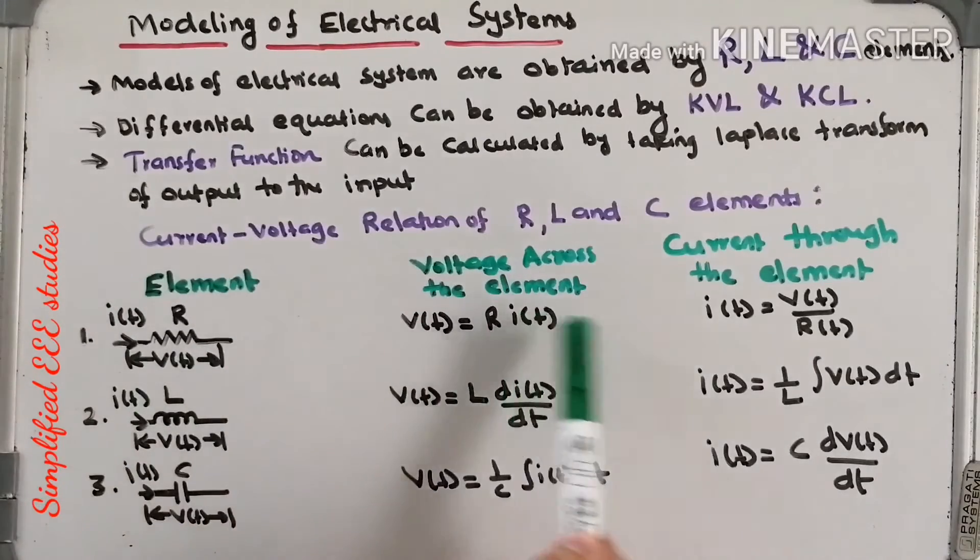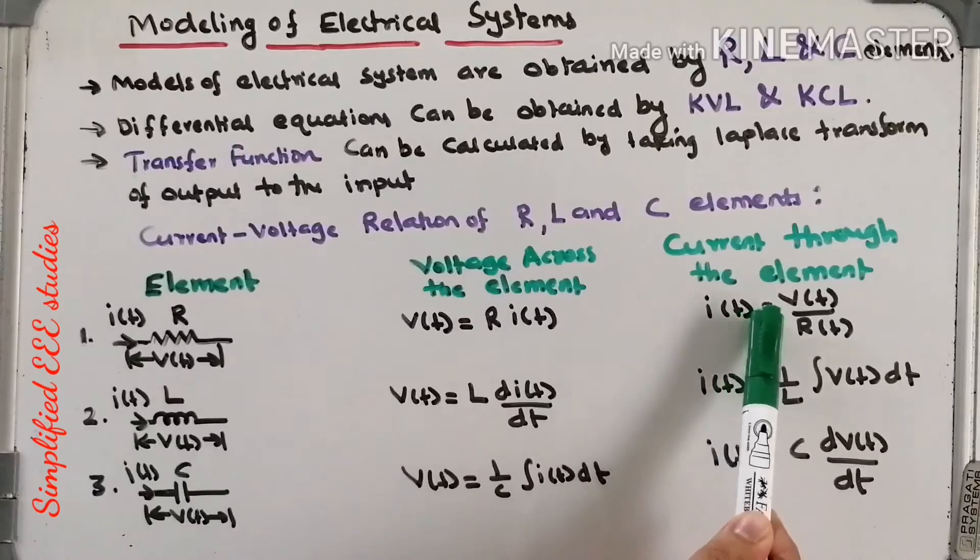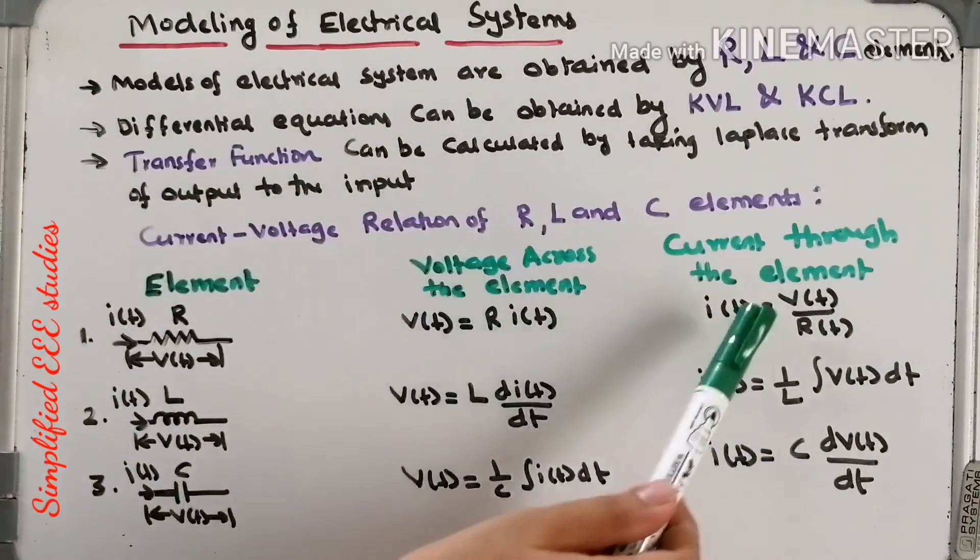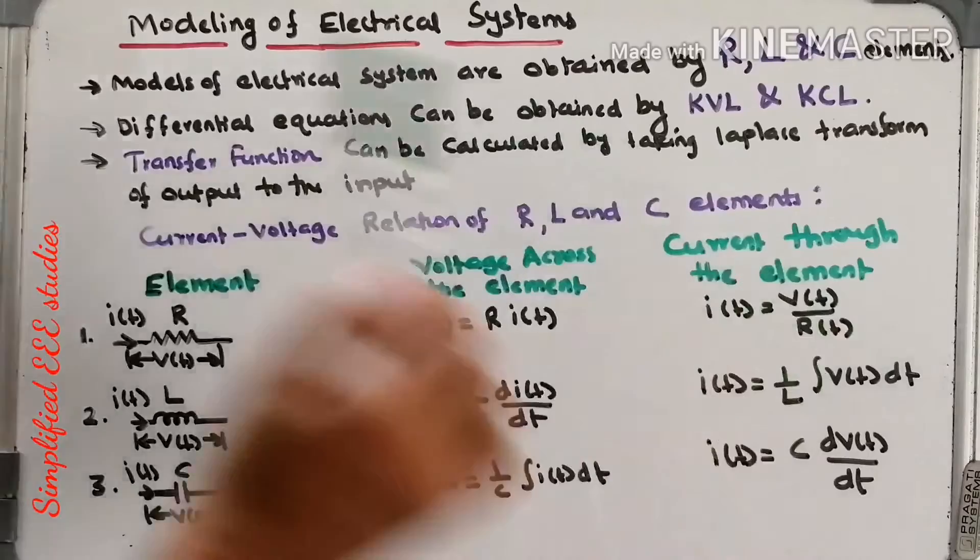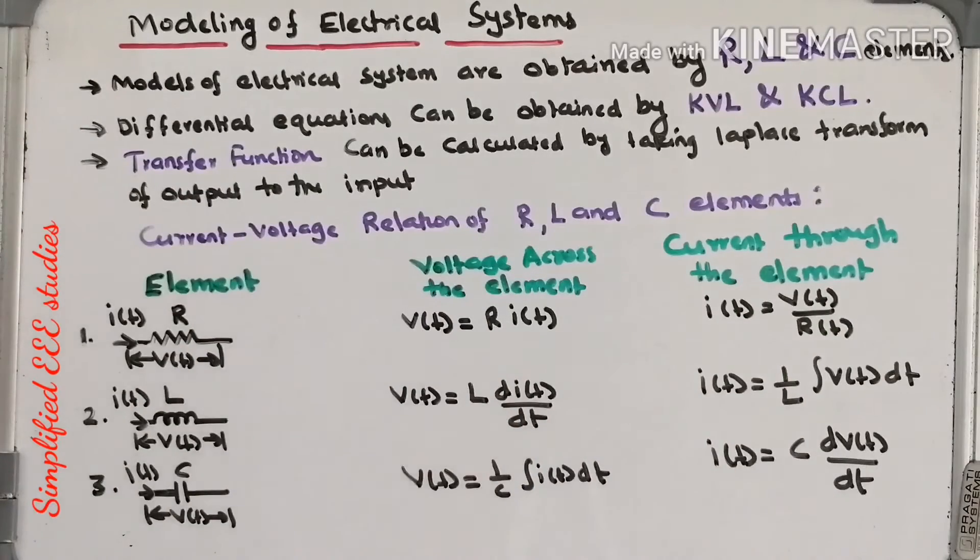From this I can calculate I(t). I(t) value can be calculated by using the equation I(t) equals V(t) divided by R. That is regarding resistance.